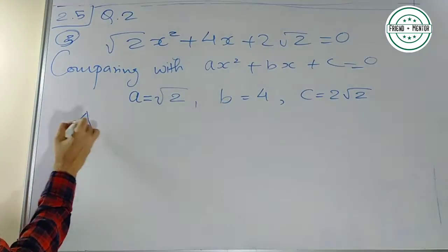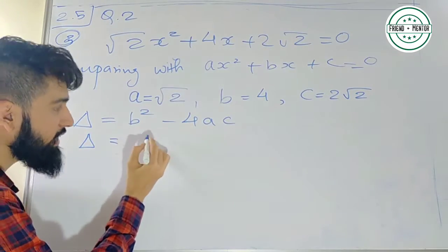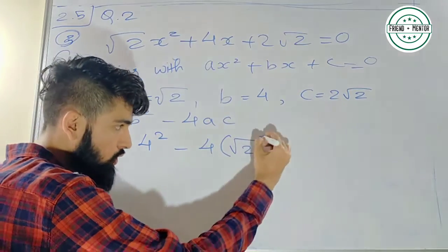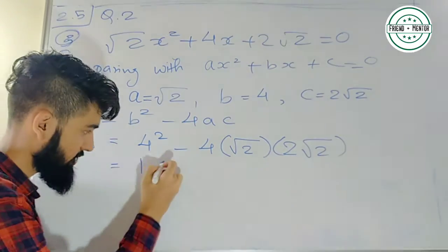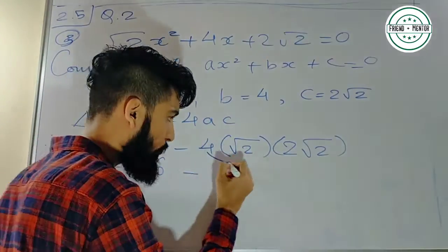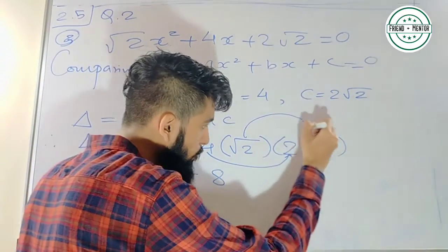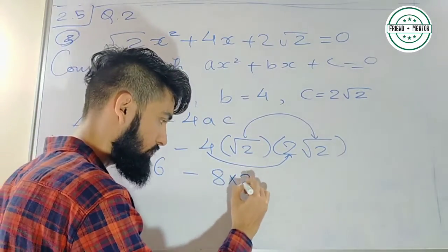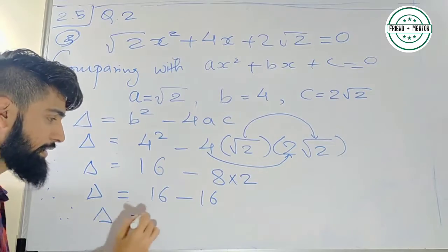अब हम लोग निकालते हैं discriminant delta = b² − 4ac. Therefore delta = 4² − 4 × root 2 × 2 root 2. We know 4 square is 16. Now जो भी numbers को multiply कर सकते हैं, उसको करते हैं — 4 को 2 के साथ multiply करने पर 8, और root 2 into root 2 = 2. So this is nothing but delta = 16 − 16, therefore delta = 0.